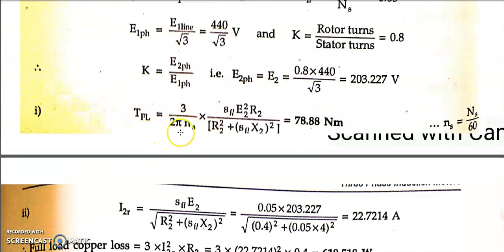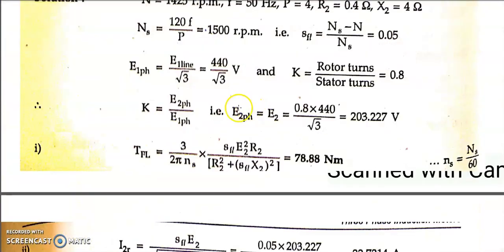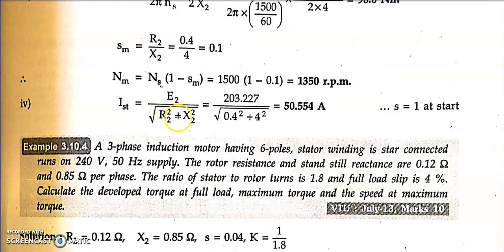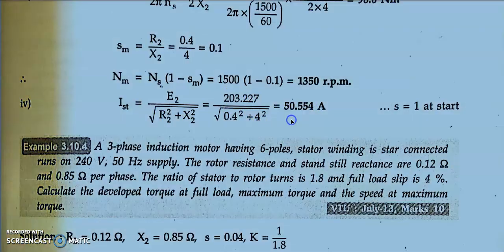Fourth question: starting current. At starting, slip s = 1, so the formula becomes i_start = e2 / z2 = e2 / √(r2² + x2²). Substituting e2 = 203.227 V, r2 = 0.4 ohm, x2 = 4 ohm gives starting current = 50.554 A. All four questions of the first problem are now solved.